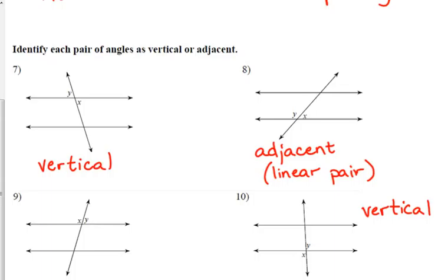Now, adjacent angles don't have to be a linear pair. But in this case, they are because of the way they're formed. You can have two angles that are just beside each other that aren't necessarily a linear pair. But these are.